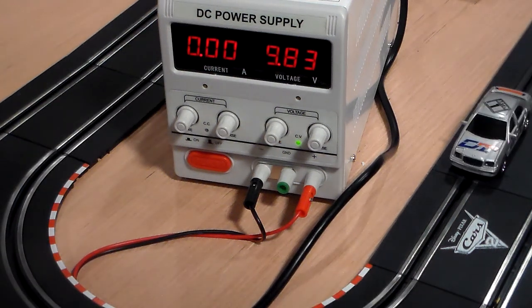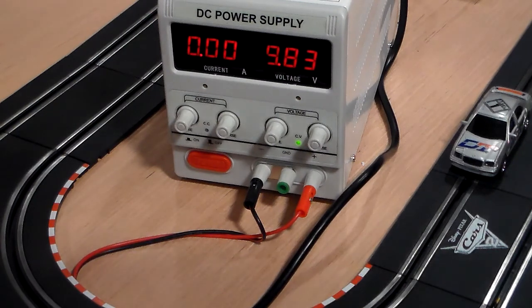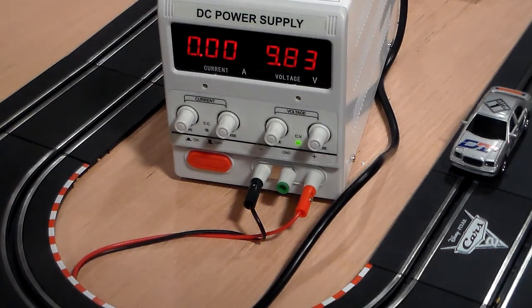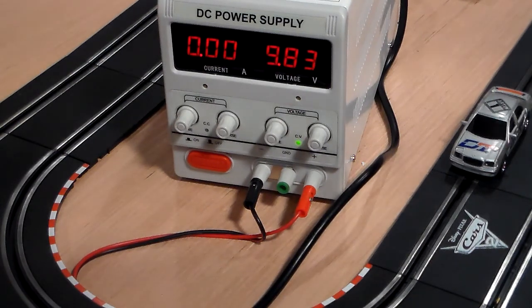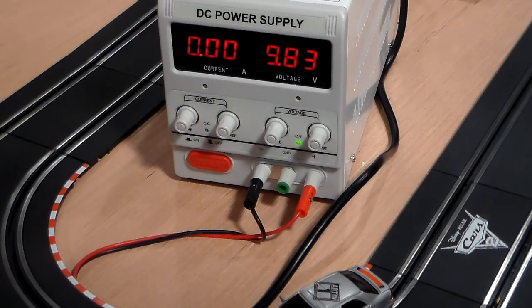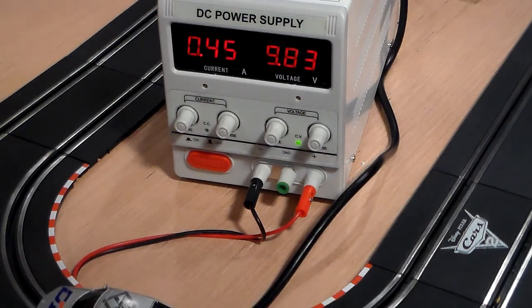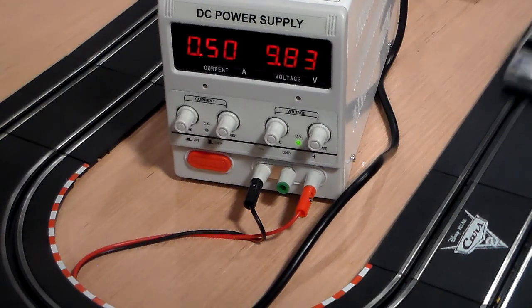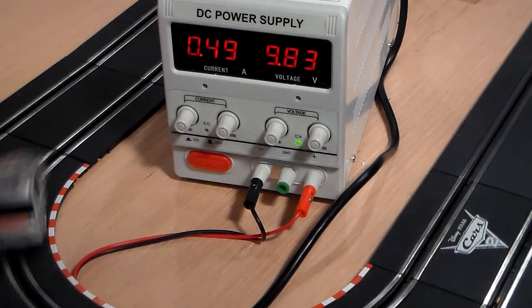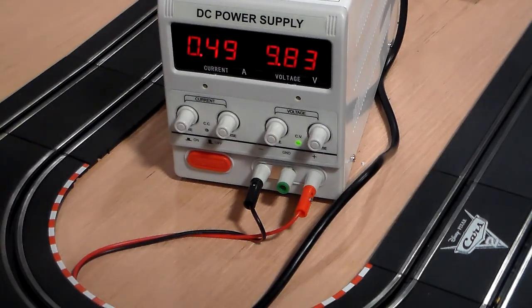Almost three quarters of an amp just to start the car moving. That doesn't mean it's a bad car, it just means that's the motor setup in it. If you sit there and play with it and see if I can get it going slow, it's using a half amp to run the track - 0.49, right at a half an amp.